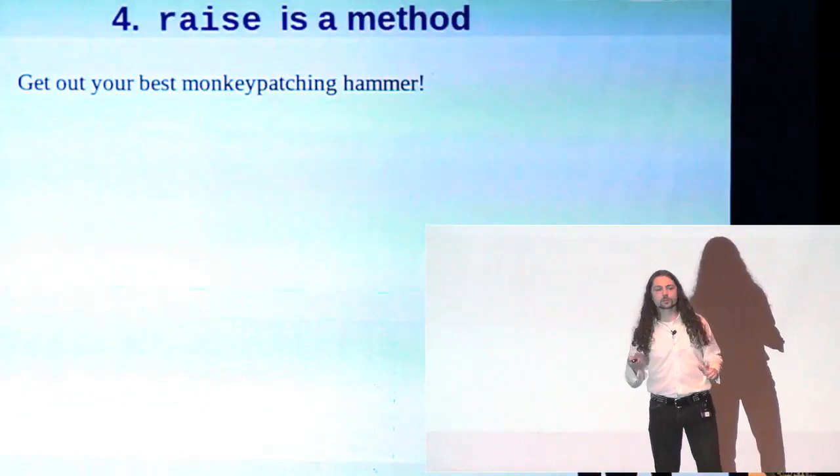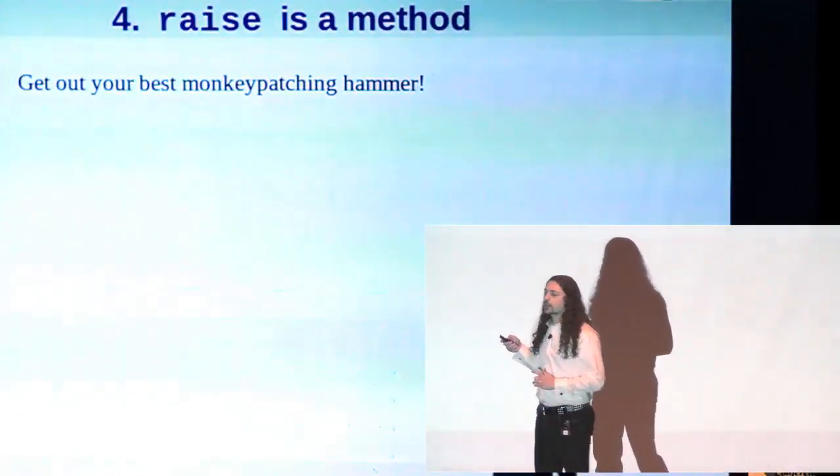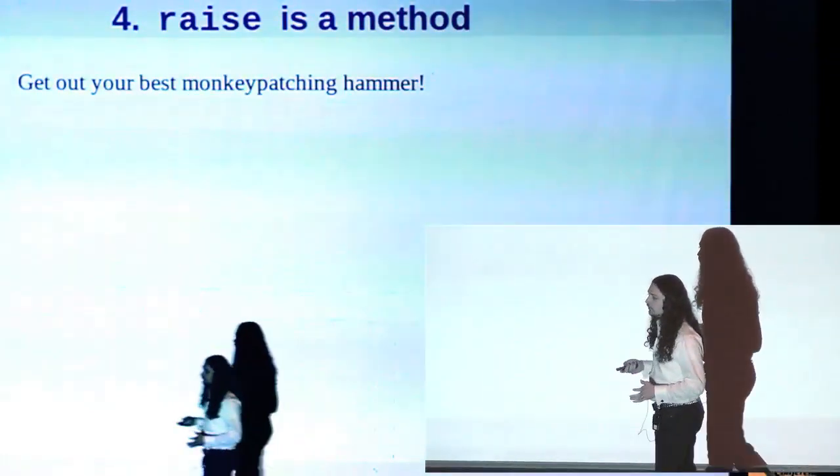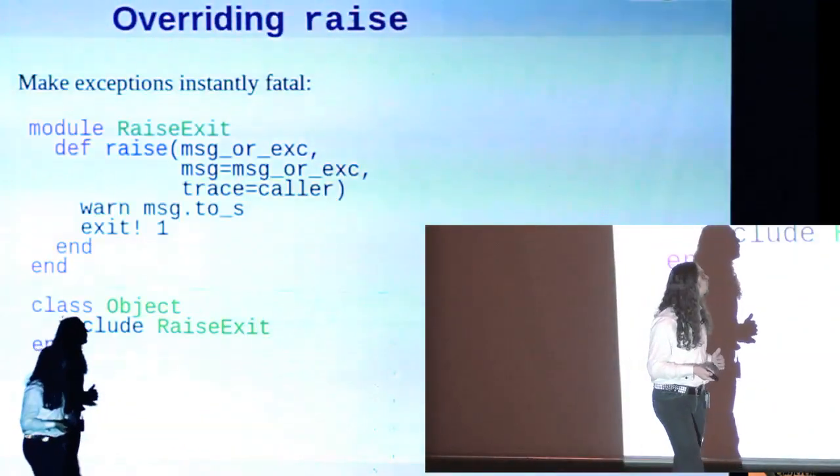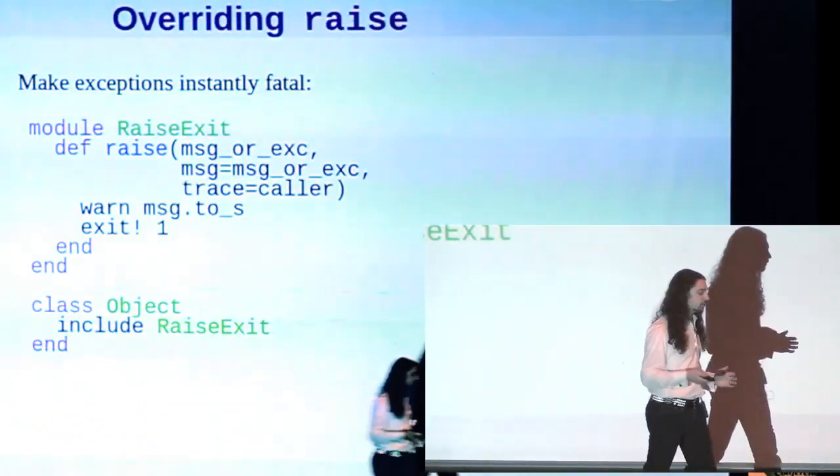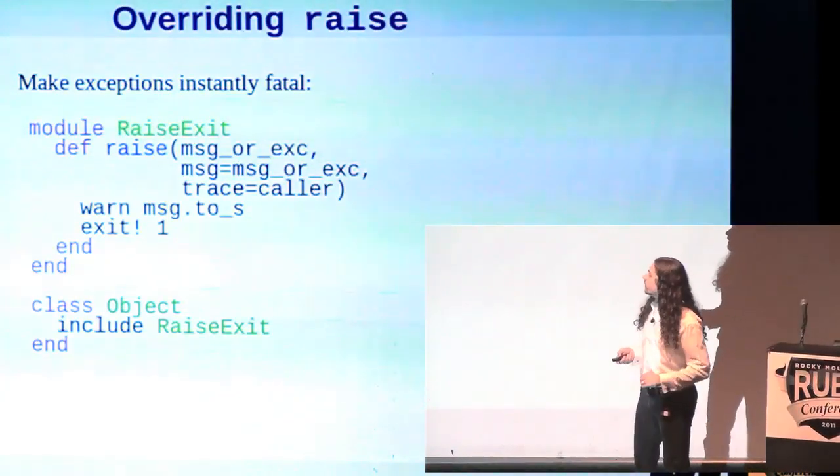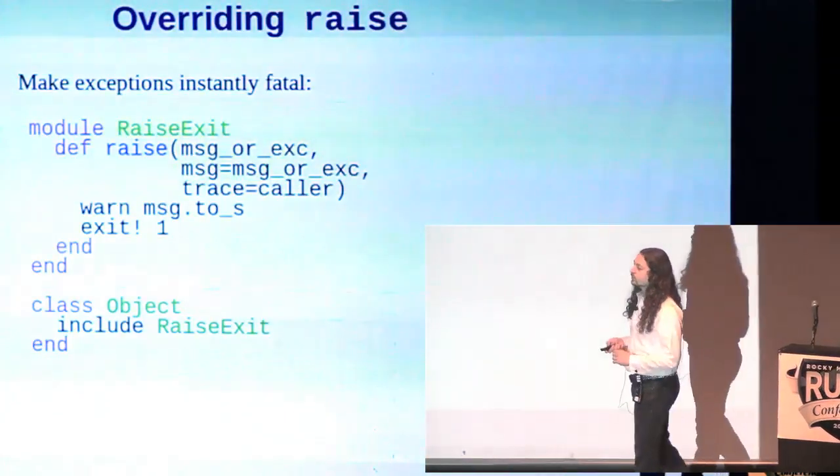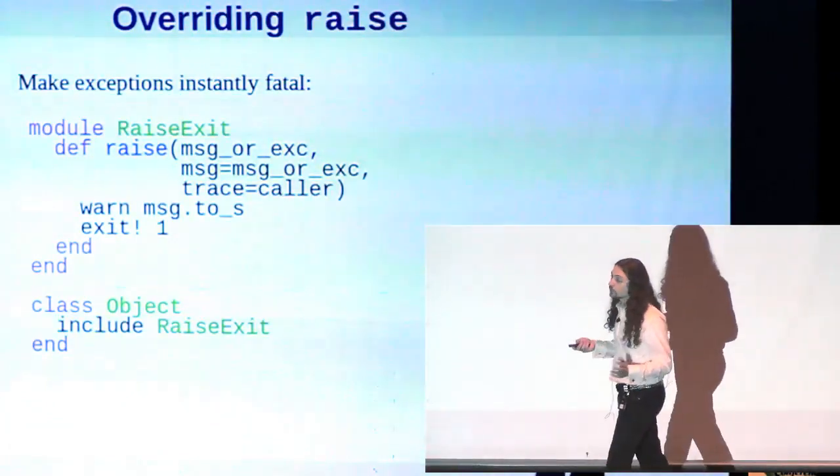One of the things that surprises a lot of people coming to Ruby is how many of the keywords really aren't keywords at all. They're methods. Raise is one of these. Raise is just a method on kernel. And what this means is we can overwrite it. We can write our own raise. So here's one example. Kind of a silly example. Let's say we're tired of all this exception business and we just want errors to be instantly fatal. Well, here's a way to make it so. This version of raise just prints out the exception message and then terminates the program. Not saying you should do this, but you could.